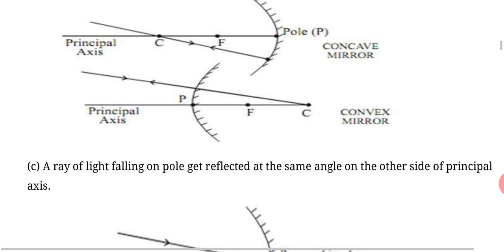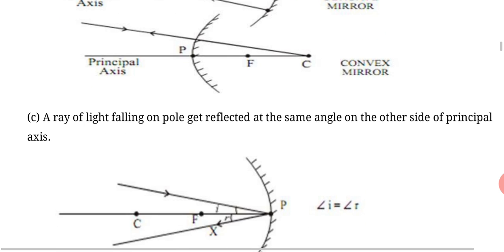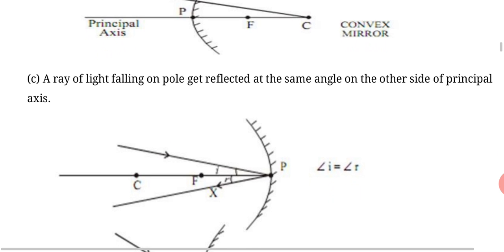Now we talk about rule number three: a ray of light falling on pole gets reflected at the same angle on the other side of principal axis. It means the ray reflecting from point P, pole, on principal axis will go at the same angle from principal axis as it came. It means angle of incident i equals angle of reflection r.